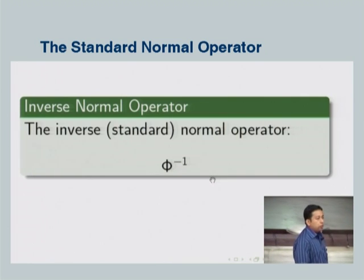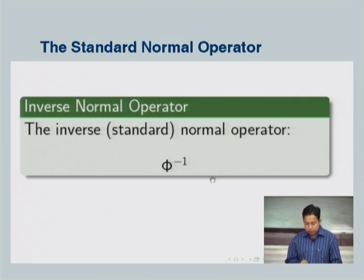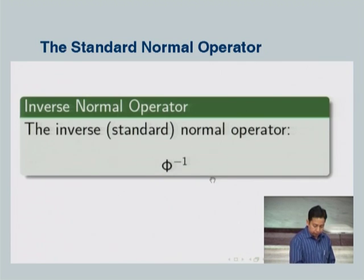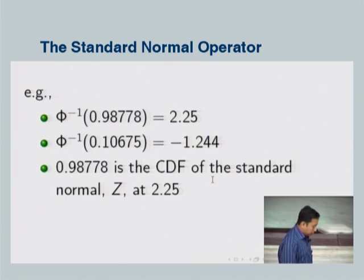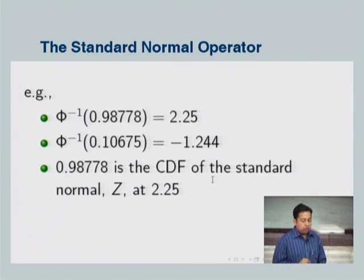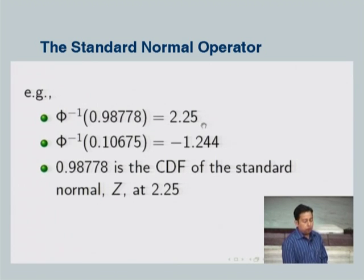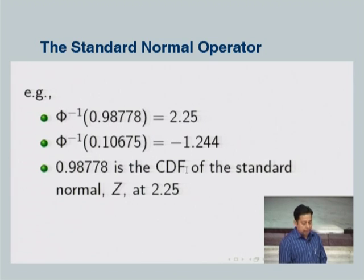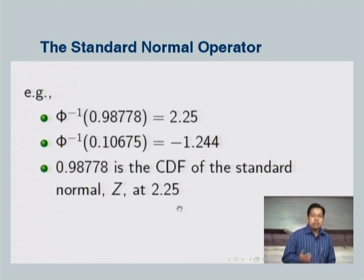We also define the inverse standard normal operator, which is the inverse of the capital phi function — the inverse of the CDF of the standard normal. For example, if phi at 2.25 equals 0.98778, then phi-inverse at 0.98778 equals 2.25. The inverse normal operator has its applications, which we will see when working through examples.